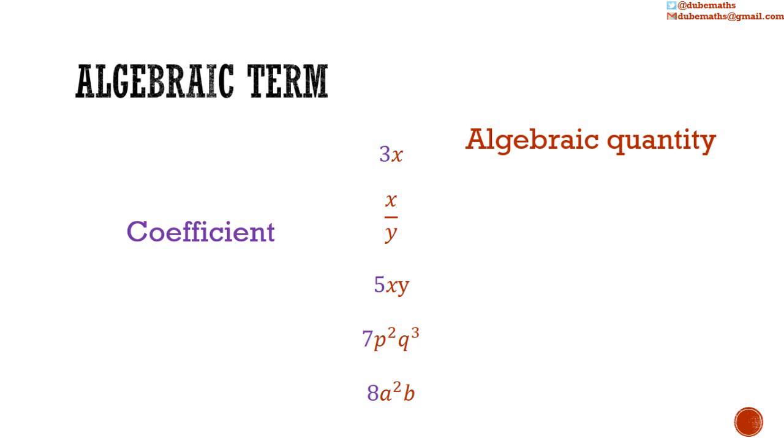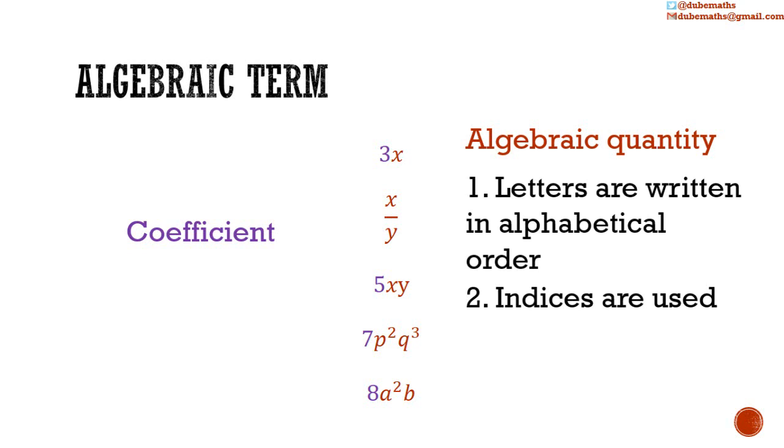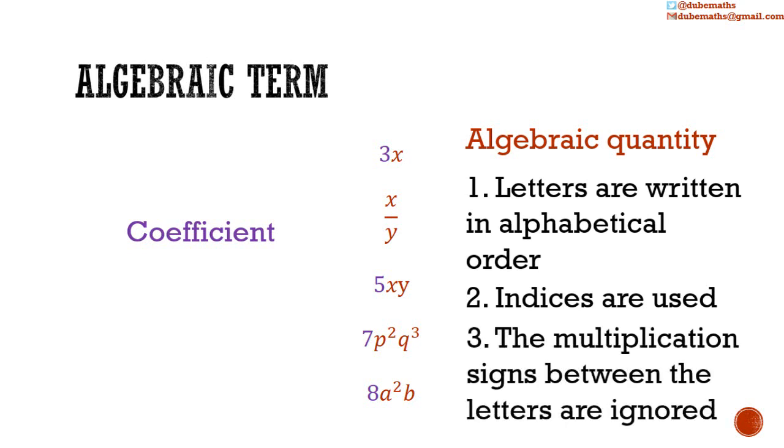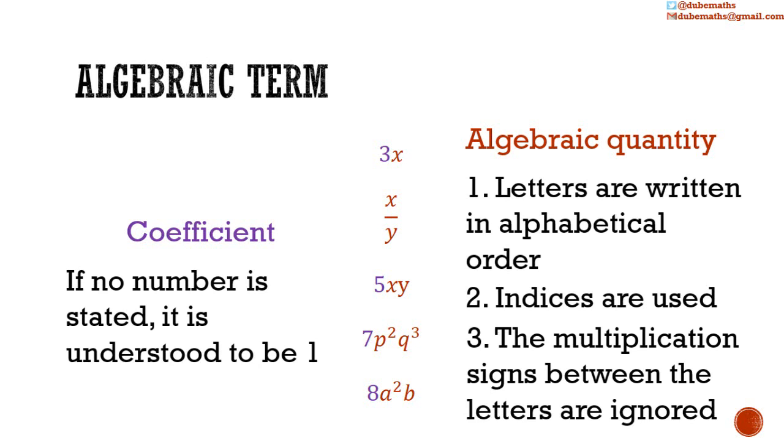Generally, we simplify by writing the letters in algebraic terms in alphabetical order, making use of indices, and omitting the multiplication sign. If no number is stated, the coefficient is understood to be 1.